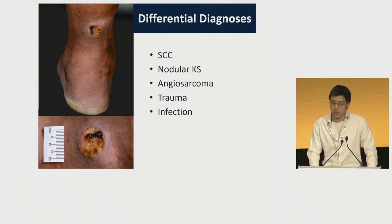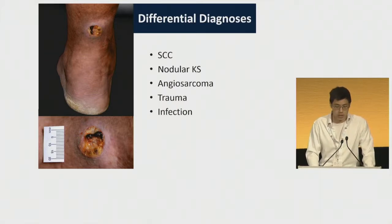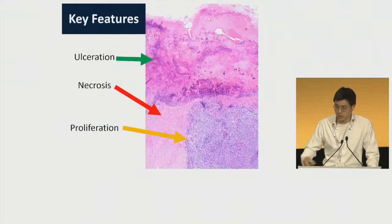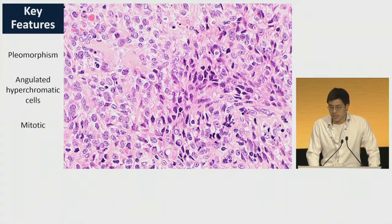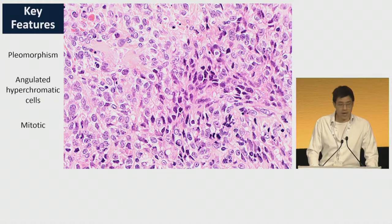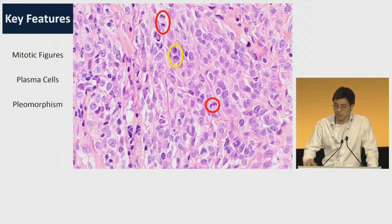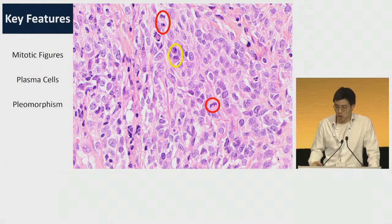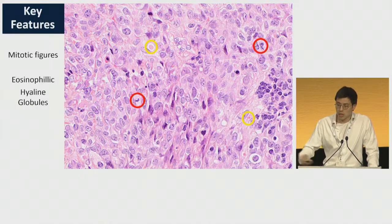Our differential diagnosis was whether this was SCC given the previous radiotherapy, a nodular KS lesion, an angiosarcoma given the lymphedema and radiotherapy, or infection. A punch biopsy showed ulceration and underlying necrosis with, on low power, a dense proliferation. At higher power, we can see the cells are pleomorphic. There are a number of angulated hypochromatic cells and numerous mitotic figures circled in red. There is a background plasma cell infiltrate as well, and we can see marked pleomorphism, which is unusual for a nodular KS lesion.